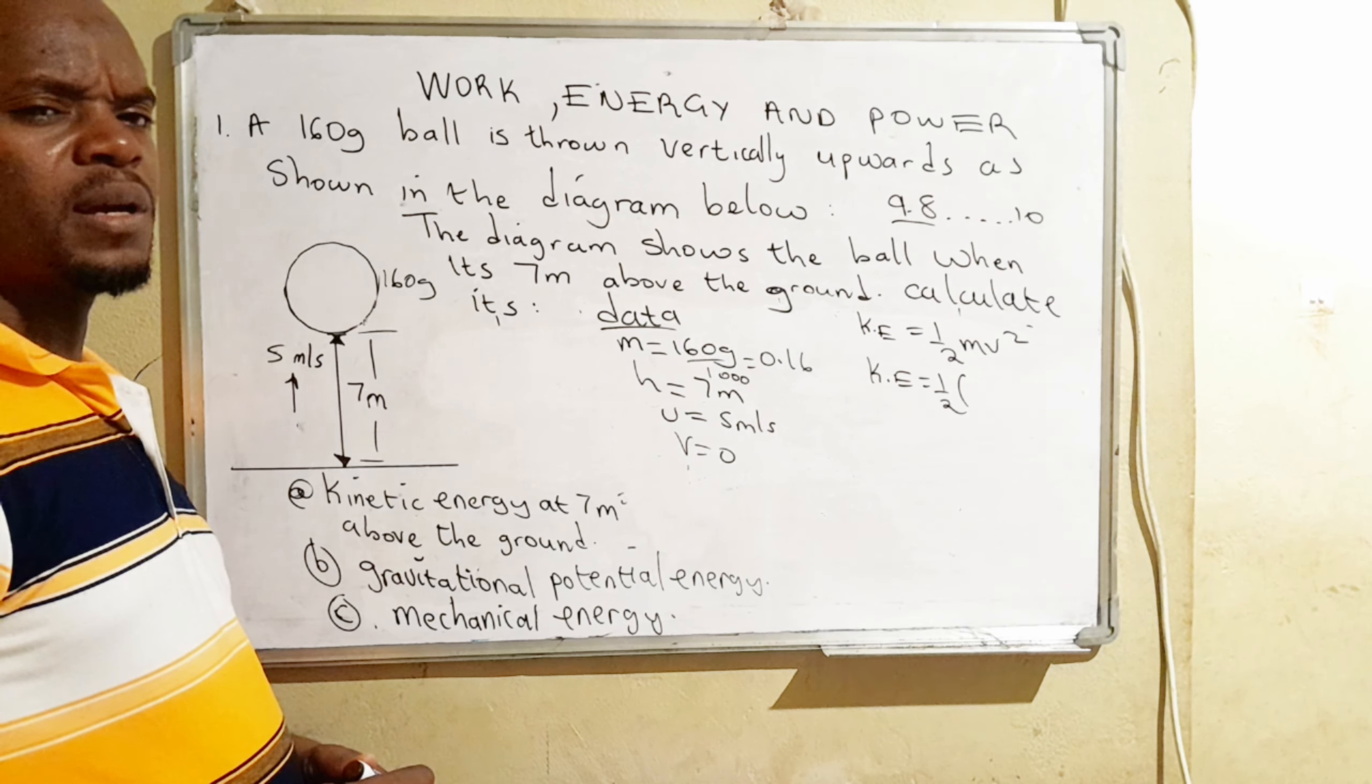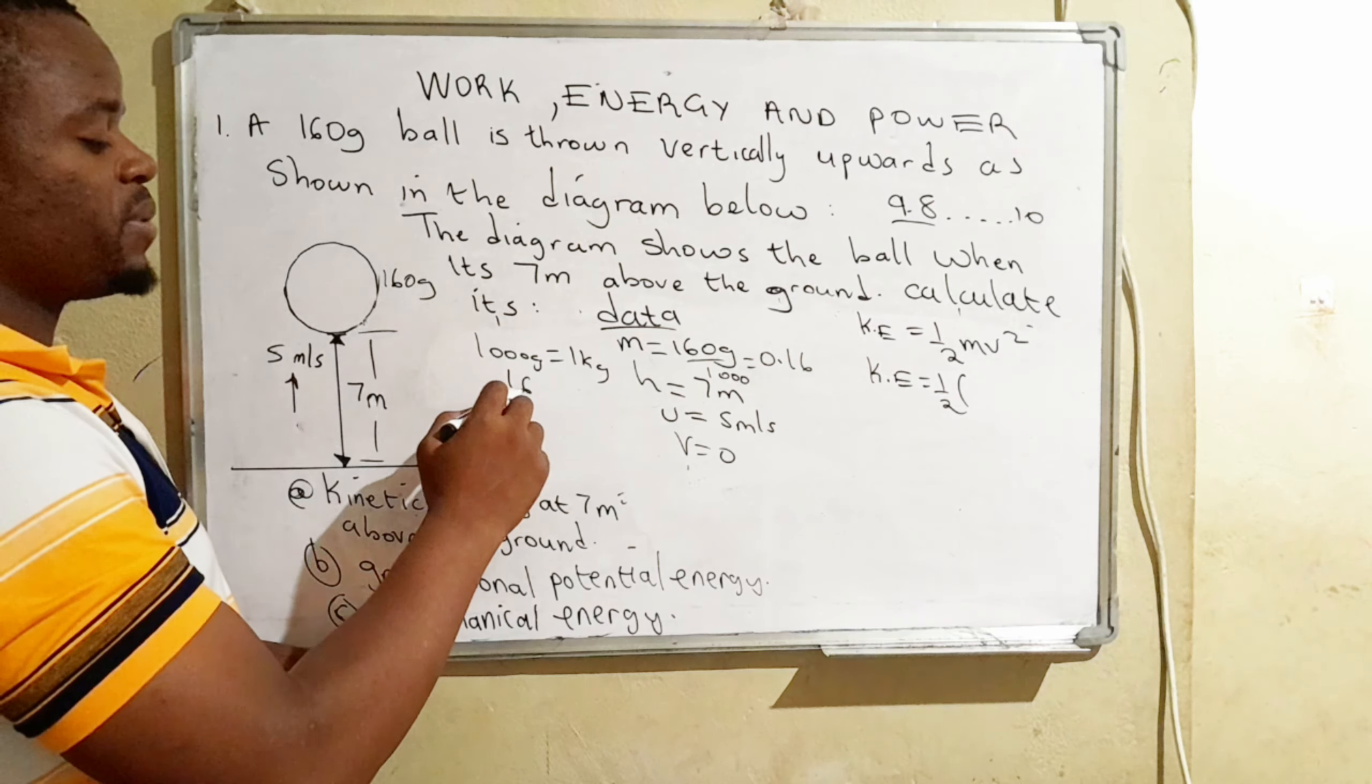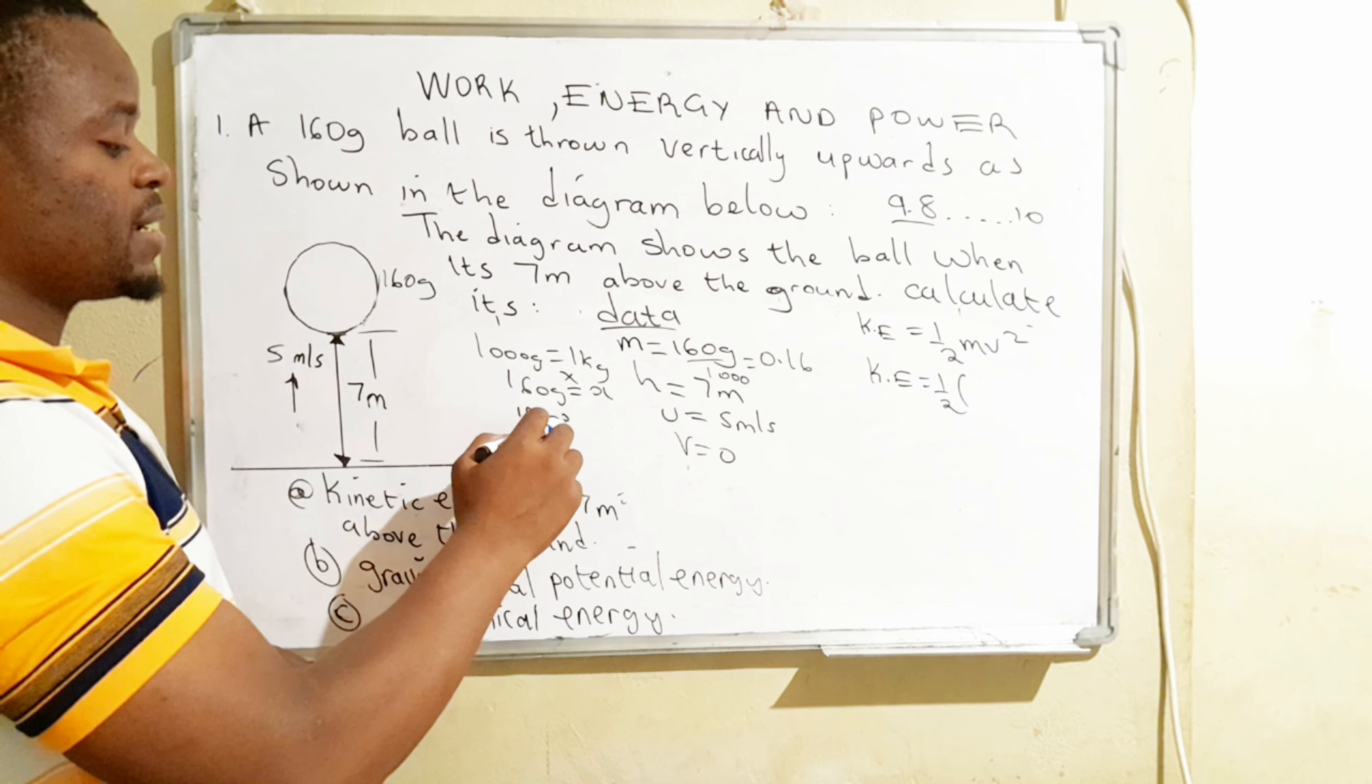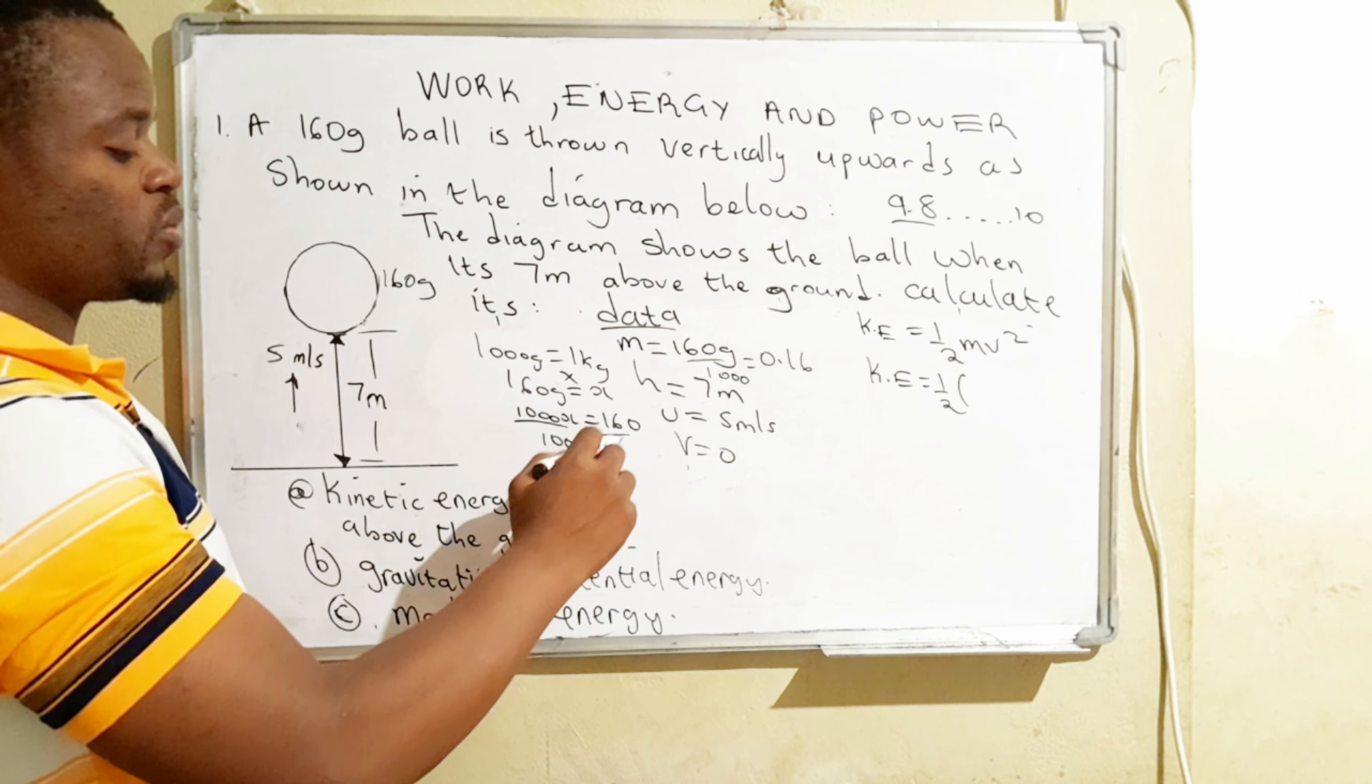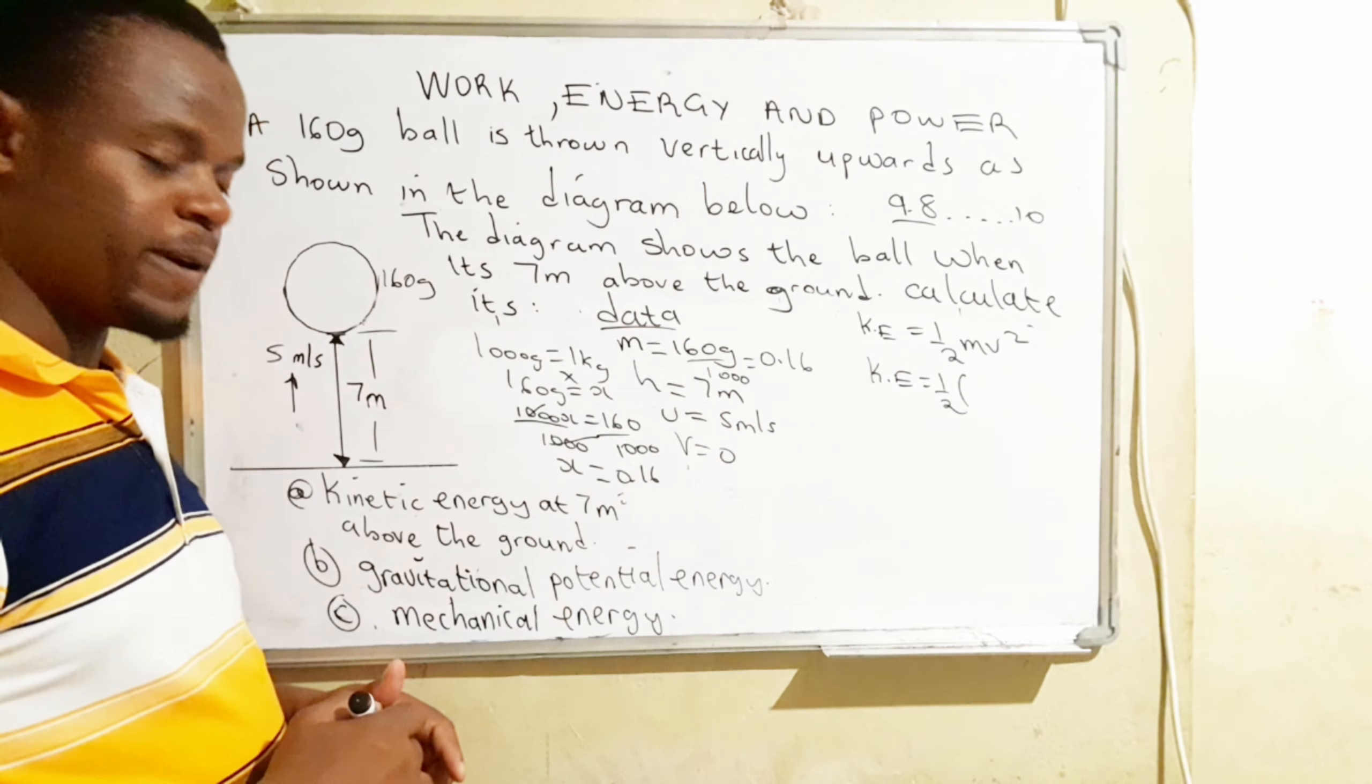You may be like, where is that one coming from? Why are we dividing by 1000? What it is, we say 1000 grams give us one kilogram. Then how about 160 grams? Then we cross multiply. So that we have 1000X which is equal to 160. Then we want to find the value of X. So we need to divide 1000 both sides. So we're going to have X is equal to 0.16. That's the reason why I was dividing by 1000 here.